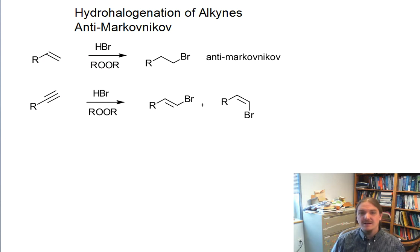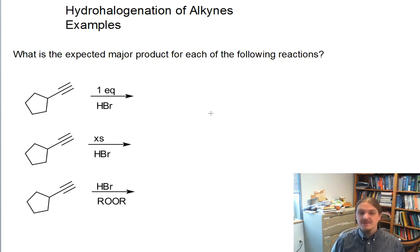Before I wrap up this video on hydrohalogenation of alkynes I want to do a couple of examples. So let's just take this alkyne cyclopropyl acetylene and go through different ways that it can react with hydrogen bromide and determine what the expected major product is going to be in each case. In the first case I have my alkyne and one equivalent of hydrogen bromide so if you remember one equivalent means that for each mole of alkyne we have one mole of hydrogen bromide. So you can think of that meaning that I only have one hydrogen bromide and it's only going to do one thing to this molecule.